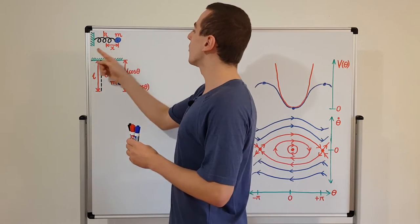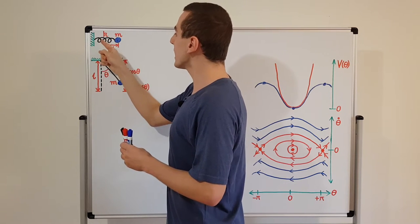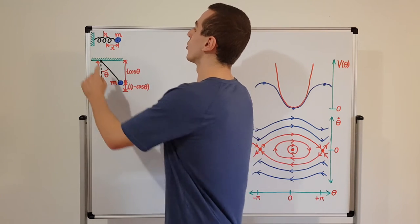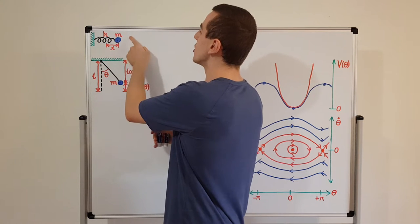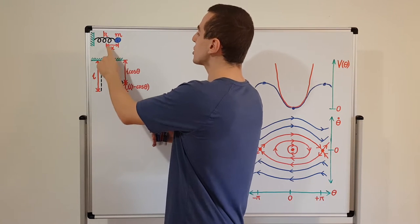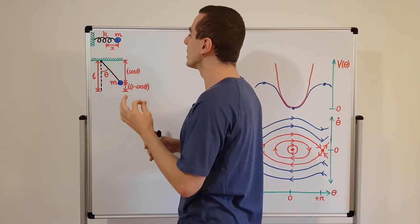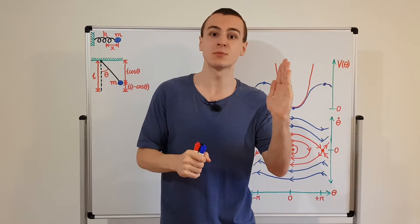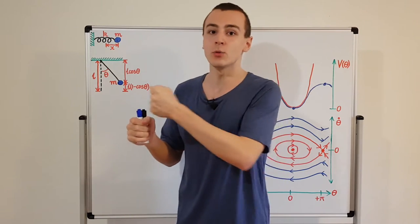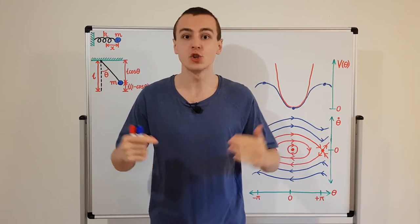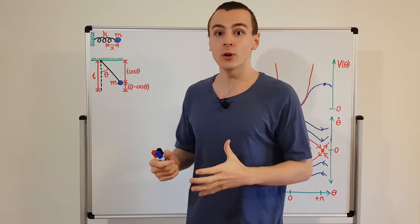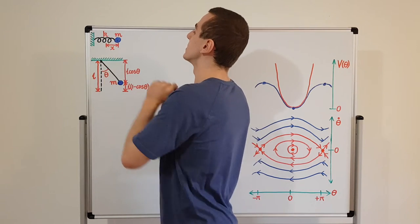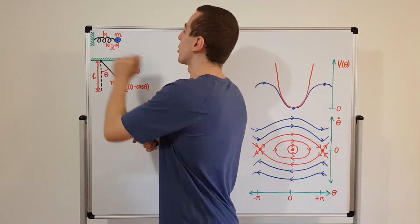Here I've drawn a diagram of a mass on a spring attached to an immovable wall. All of the physical characteristics of the spring can be quantified with the constant k, and the mass is denoted by lowercase m. The coordinate x is measured away from the equilibrium position, so this spring has an equilibrium position, and k is determined by the physical properties of that spring.